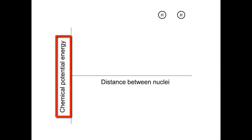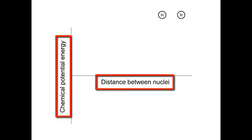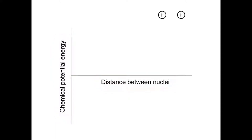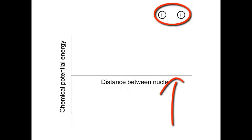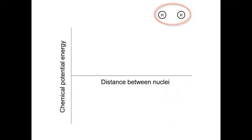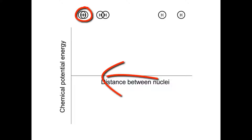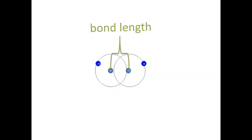To do this, we're going to plot chemical potential energy against distance between nuclei. Let's imagine that we have two hydrogen atoms. On this end of the graph we're going to plot what the situation is like when they're very far apart — there's a great distance between their nuclei — and then we're going to see what happens to their chemical potential energy as they move close together and as they are very close together.